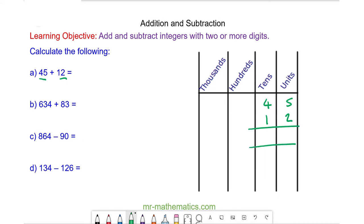To work out the total, we're going to begin in the lowest value column, which is the units, and then we're going to move to the left as the columns increase in value. So we have 5 units add 2 units, which is 7 units. 4 tens add 1 ten, which is 5 tens. So 45 add 12 is 57.